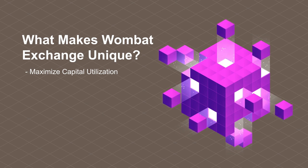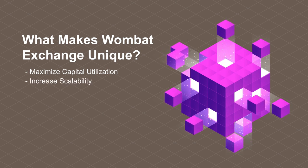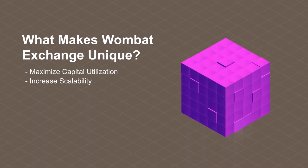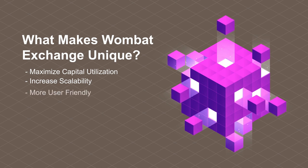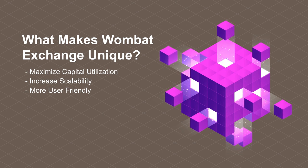Second, increase scalability. Wombat's flexible liquidity pools allow staking with a single token, which facilitates liquidity growth without the need for complex maneuvers. Third, more user-friendly. Wombat helps users swap tokens and earn interest on any stablecoin currency across various blockchains via an intuitive UI.